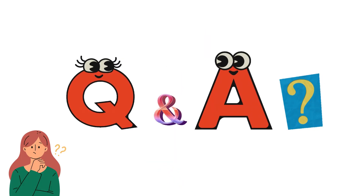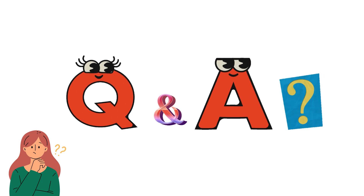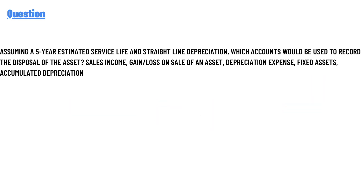Our today's question is: assuming a five-year estimated service life and straight-line depreciation, which accounts would be used to record the disposal of the asset? The options are: sales income, gain or loss on sales of an asset, depreciation expense, fixed asset, and accumulated depreciation.